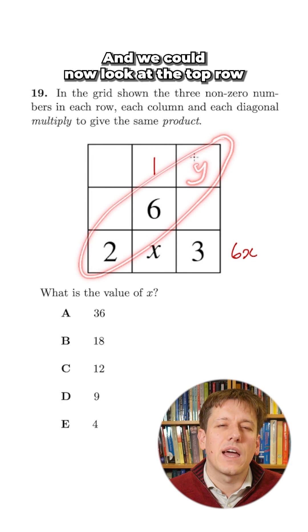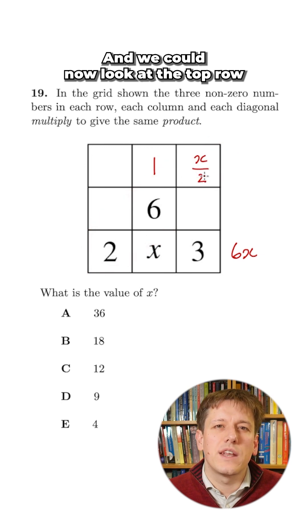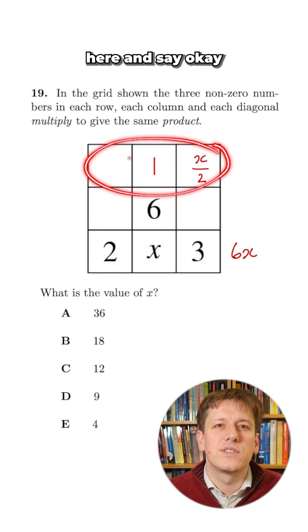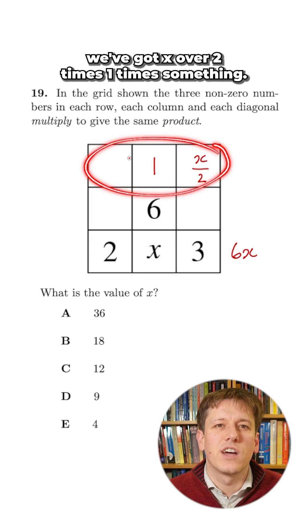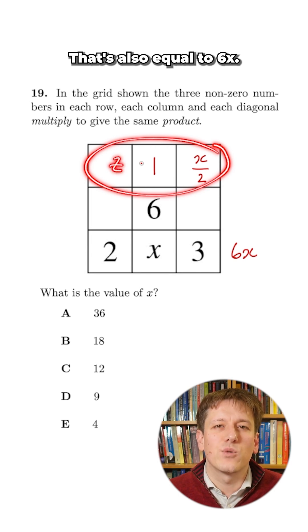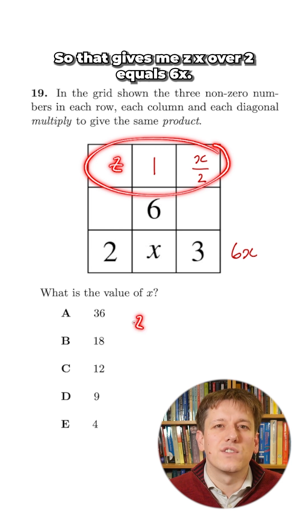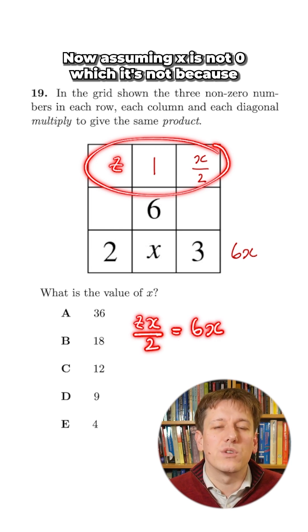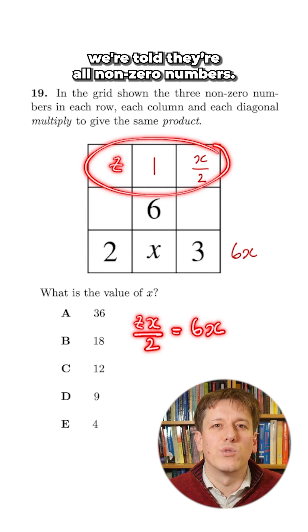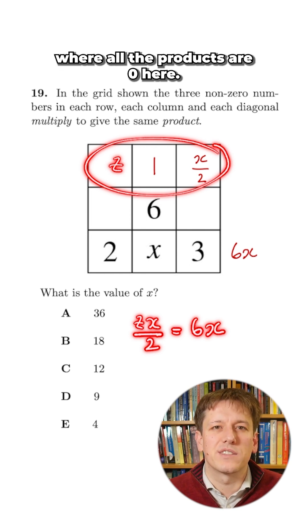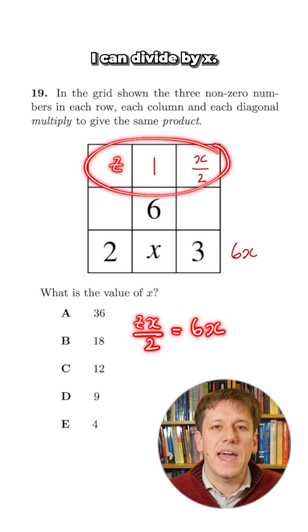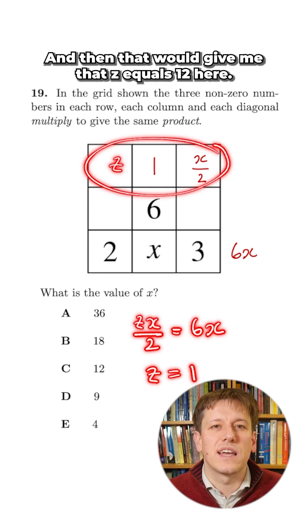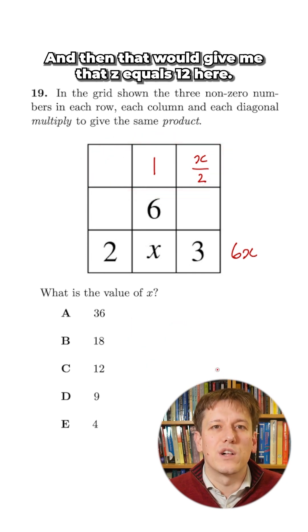And we could now look at the top row here and say, okay, we've got x over 2 times 1 times something, let's call it z, that's also equal to 6x. So that gives me zx over 2 equals 6x. Now assuming x is not 0, which it's not because we're told they're all non-zero numbers, I can divide by x and then that would give me that z equals 12 here.